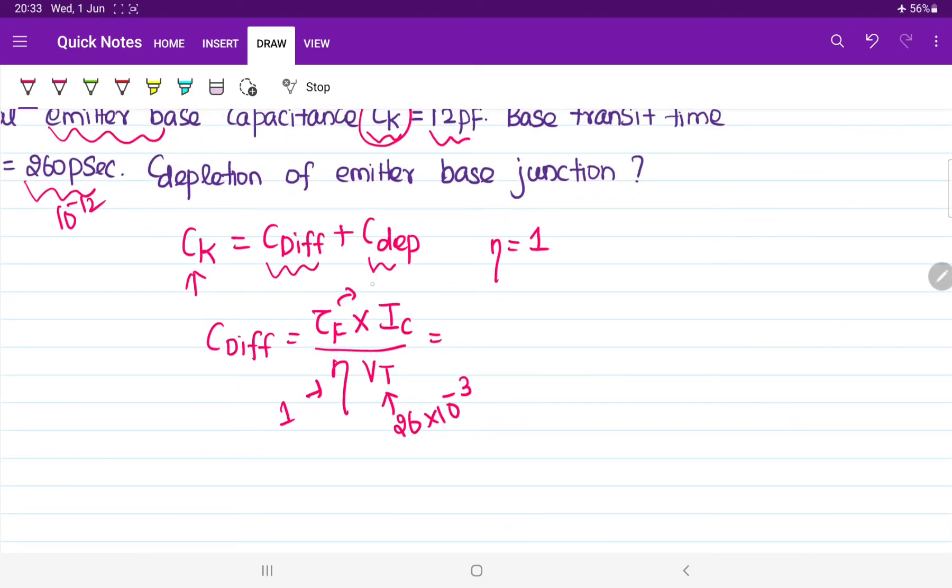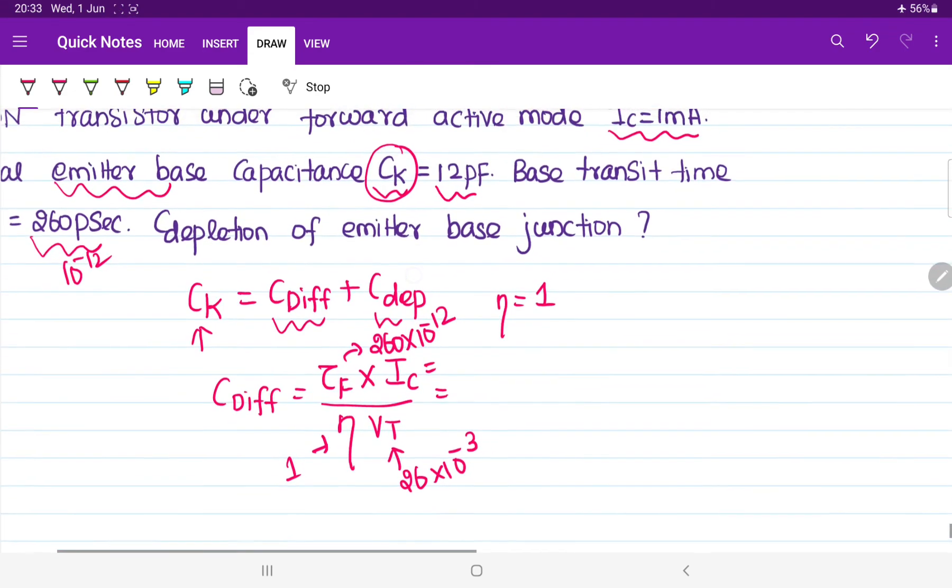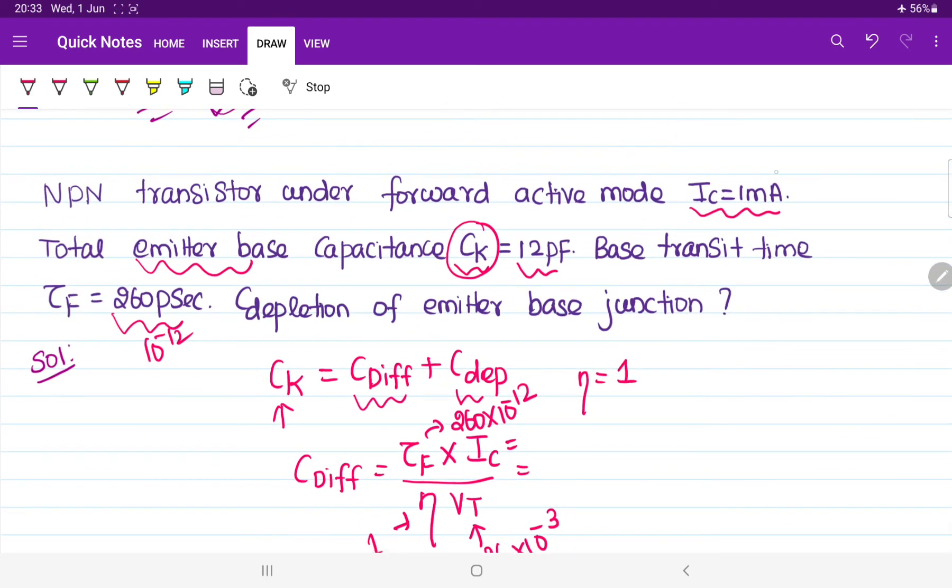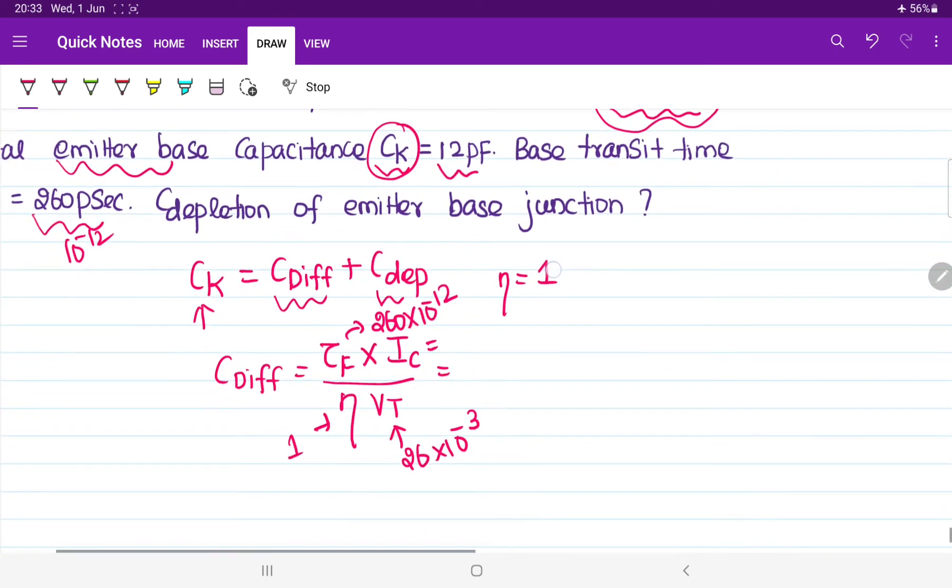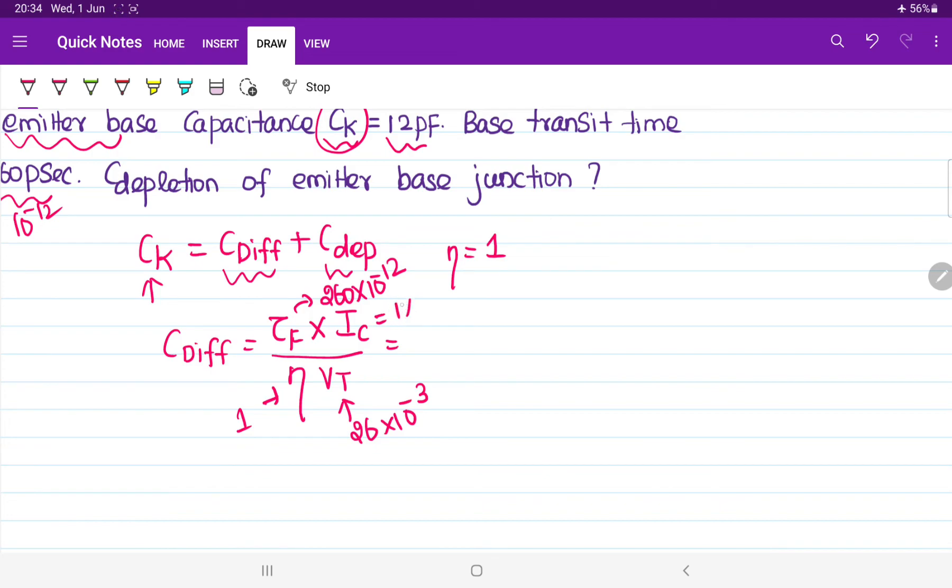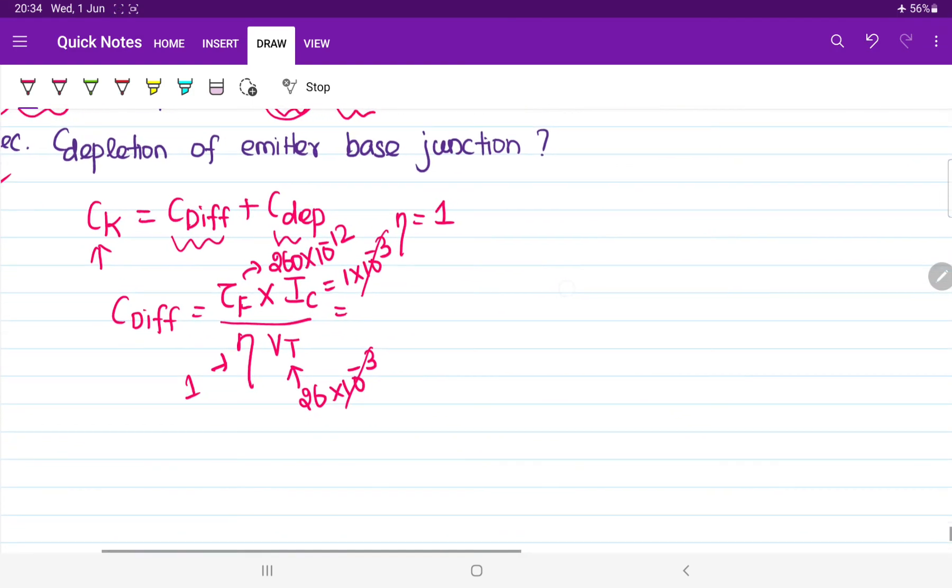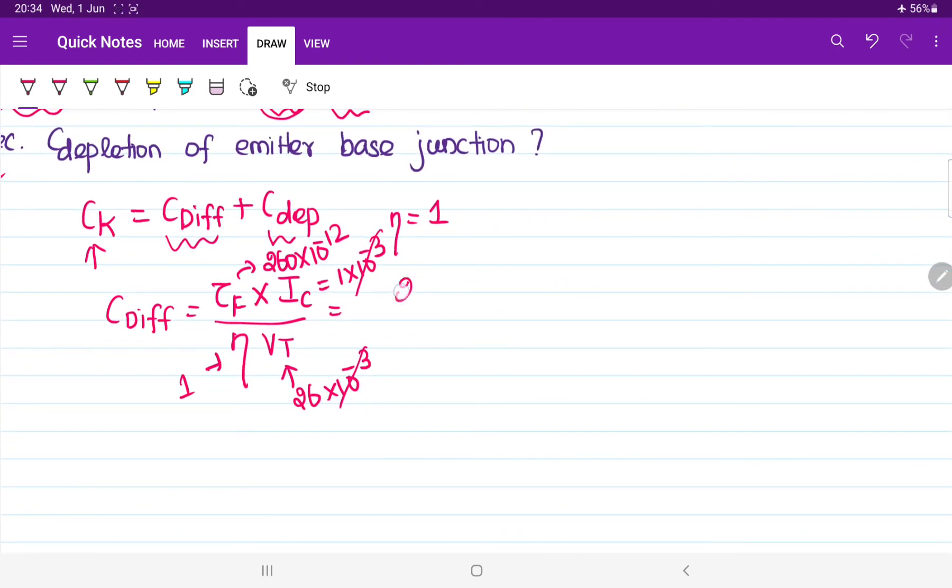Now, transit time is given as 260 picofarad. Pico means 10 power minus 12. Collector value is given in the question. The value of collector current is 1 milliampere. Substitute that value. If I will substitute, 1 milli means 10 power minus 3. So, this 10 power minus 3, 10 power minus 3 will get cancelled out. Finally, we will be having 260 upon 26 into 10 power minus 12. So, 10 times of 26 will give you 260. So it will be 10, 10 power minus 12.